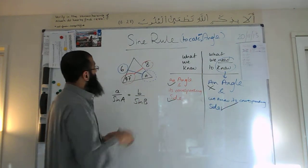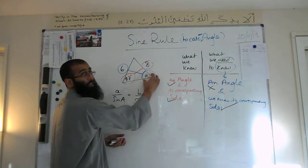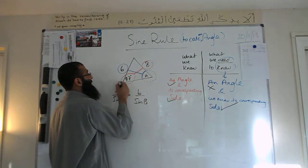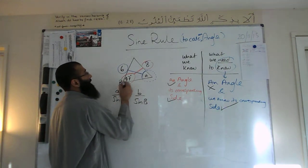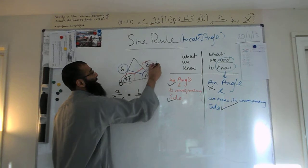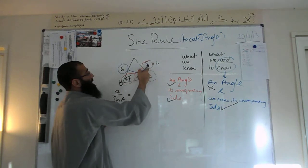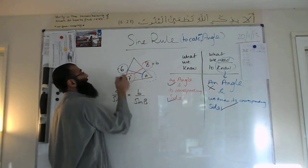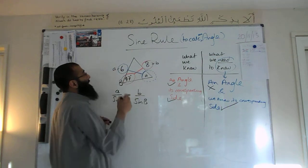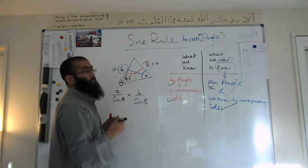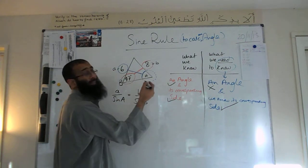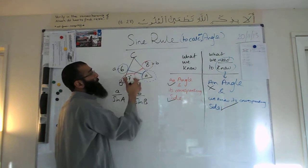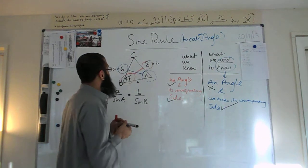We need to label this triangle. We're already given A in the question. I'm going to label this corner here B, which makes that side little b. So if that's big A — the angle — then that will be its corresponding length, little a. For completeness, we can label the remaining corner C and side little c, though they won't be used in this question.